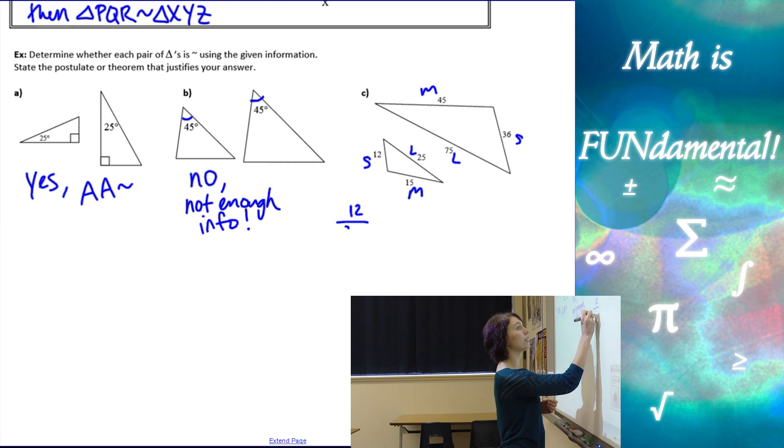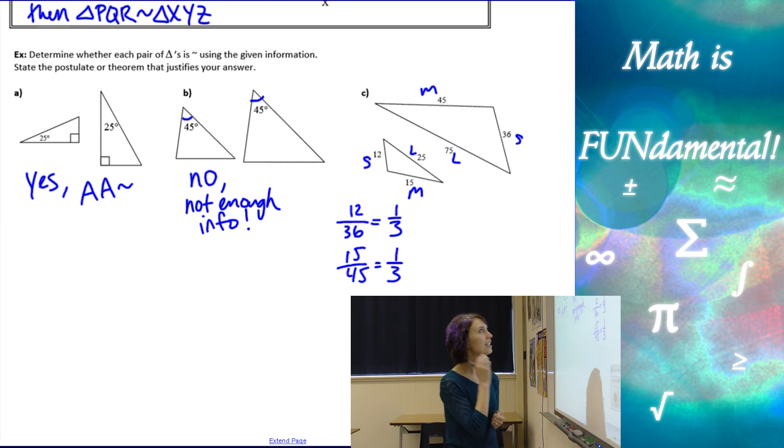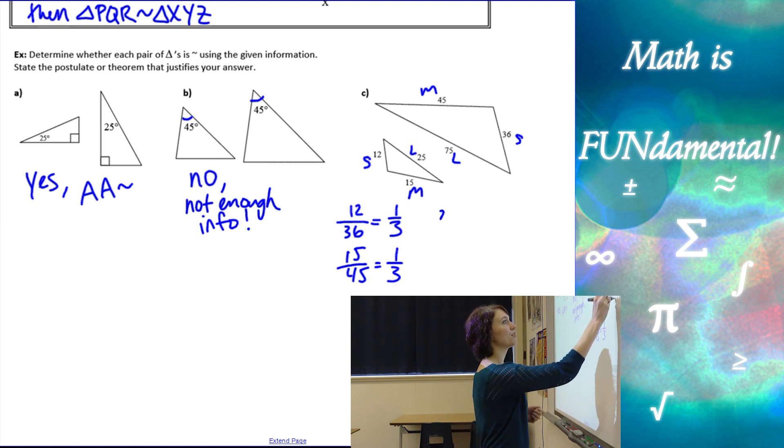12 over 36, which reduces to one-third. We have 15, our medium sides, over 45, which reduces to one-third. This is looking good. And then our large, we have 25 over 75, which also reduces to one-third.